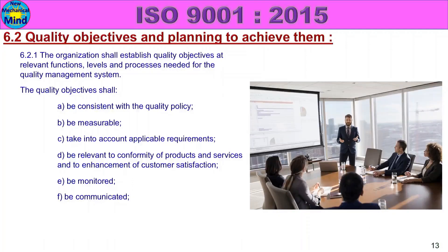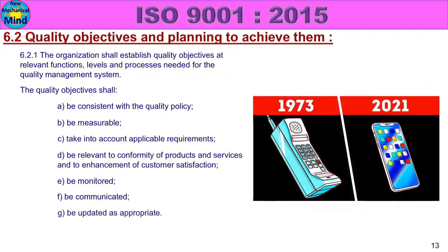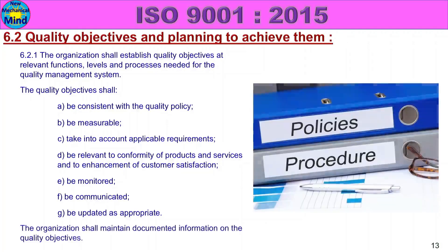Quality objectives shall be communicated — the actions will be implemented — and updated as appropriate. The current situation will be improved. The organization shall maintain documented information on the quality objectives. When the quality management system has documented information, you can easily manage the modified quality procedures. Quality objective points will be processed.